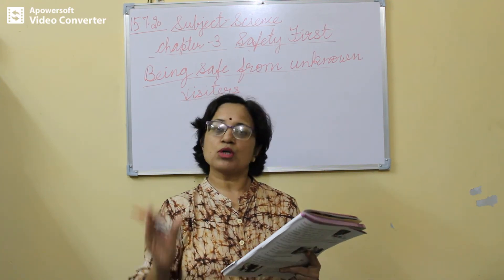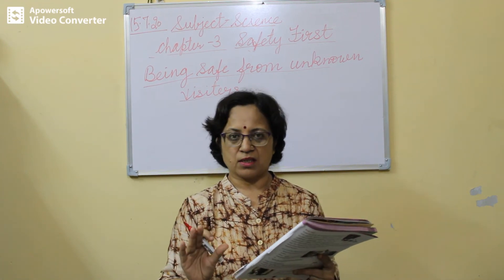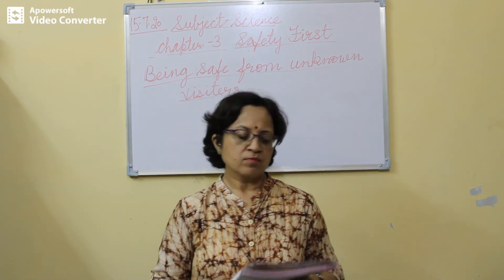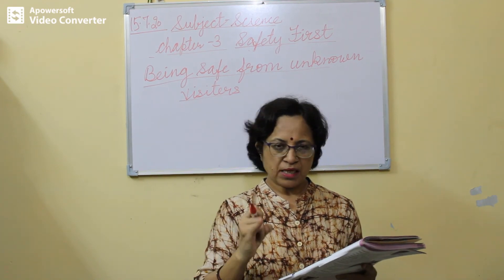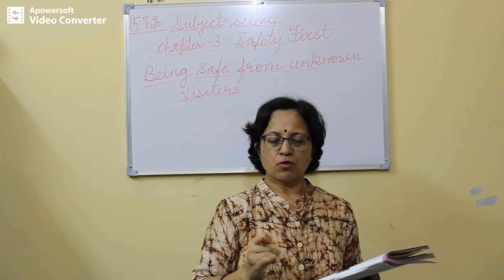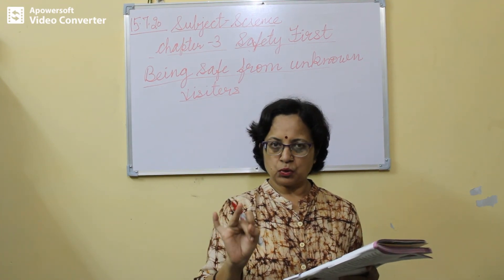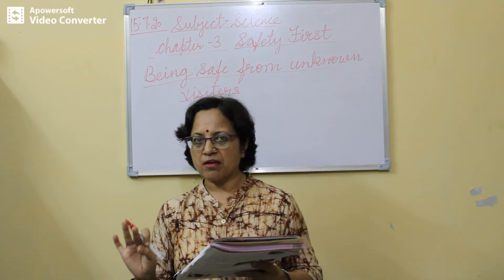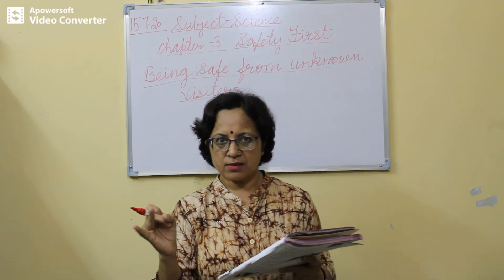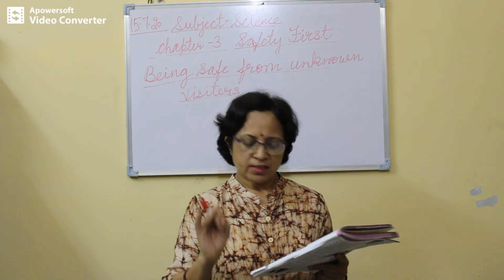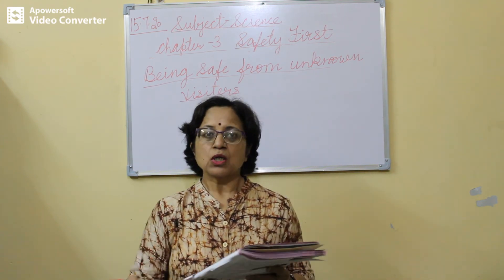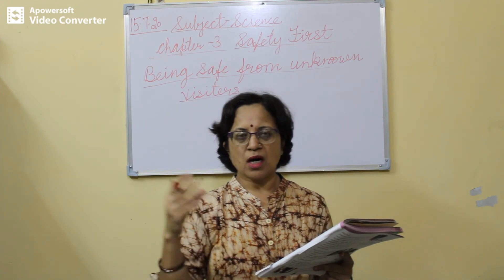When you follow all these rules, then you will be safe from unknown visitors as well. Today we studied safety on the road: use the footpath or walk on the left side, use the zebra crossing, and cross only when the vehicle stops. For being safe from unknown visitors: use a magic eye or safety chains, open the door only for people you know, and do not give your address or phone number to unknown callers.